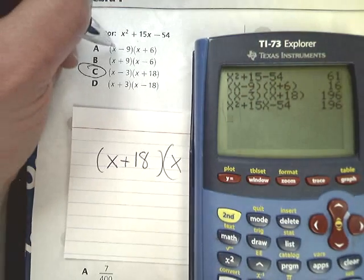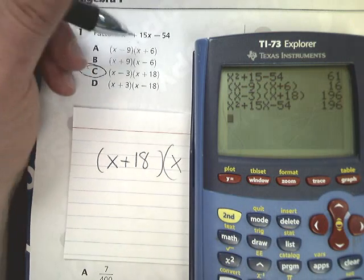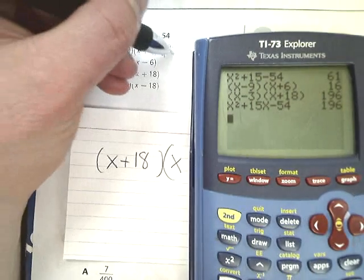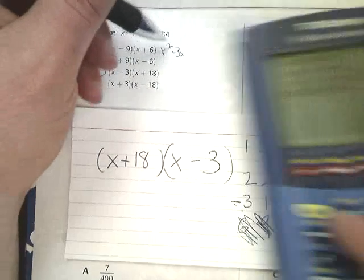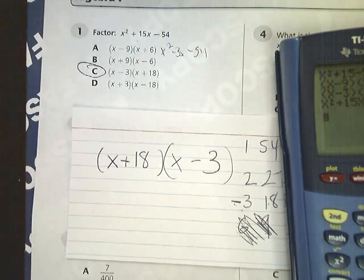Also, I could have tried just multiplying binomials here. I could have done x times x. This one would have given me x squared minus 3x minus 54. But that's not what I'm looking for. So any of those ways would work fine.